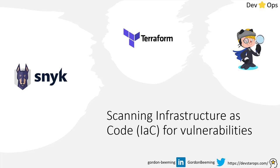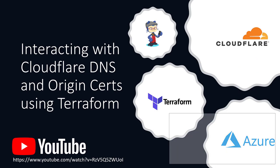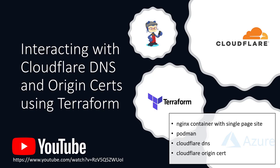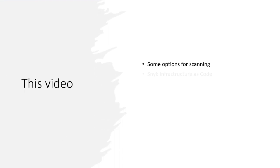So today what we're going to do is take a look at scanning infrastructure as code for vulnerabilities. The repo for this builds off the previous video where we primarily looked at Cloudflare — connecting to Cloudflare for the DNS and the origin certs. We're going to look at some options you'd have for infrastructure scanning, or Terraform scanning, and then dig deeper into Snyk specifically and some of the options that Snyk gives you.